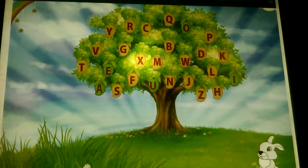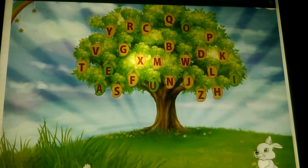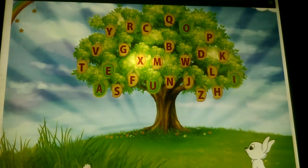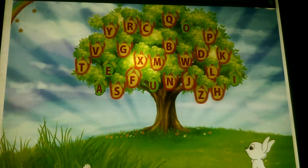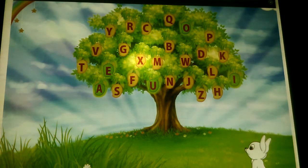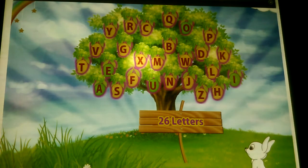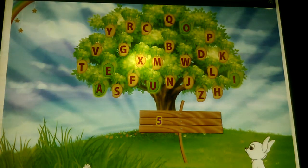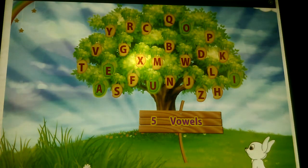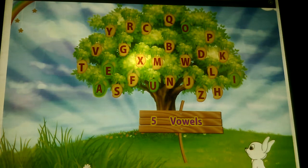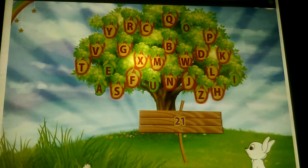Why are you staring at that tree? You like the alphabetical mangoes on it. You have found a difference in their colour. While most of the mangoes are orange, there are five that are green. The English alphabet has 26 letters. Five of the letters are vowels. The five green mangoes have the vowels on them. So the five vowels are A, E, I, O and U. The other 21 letters are called the consonants.